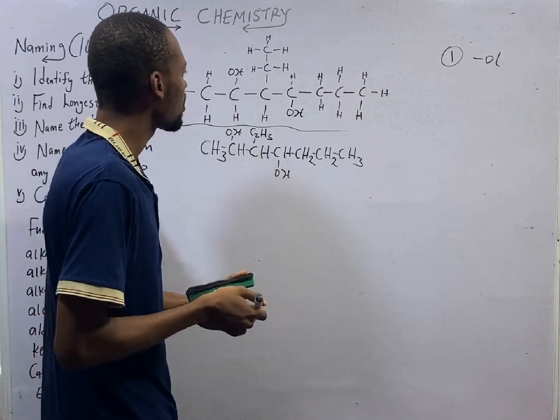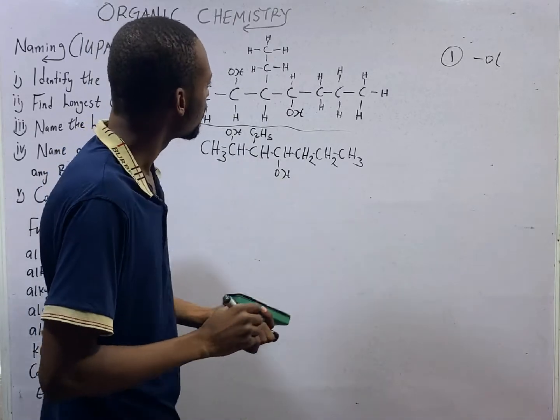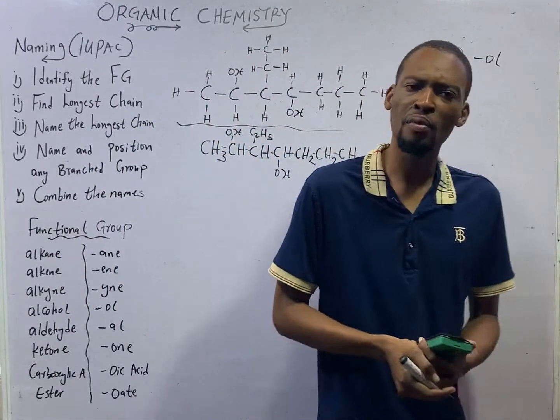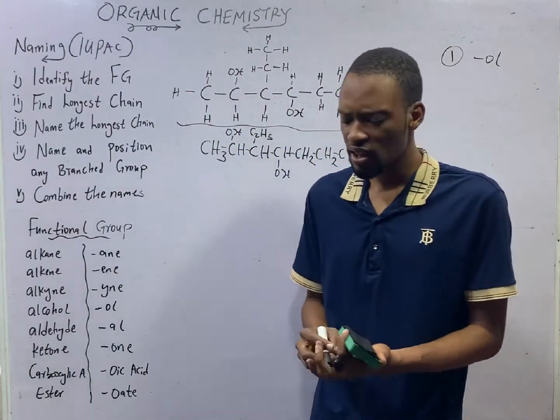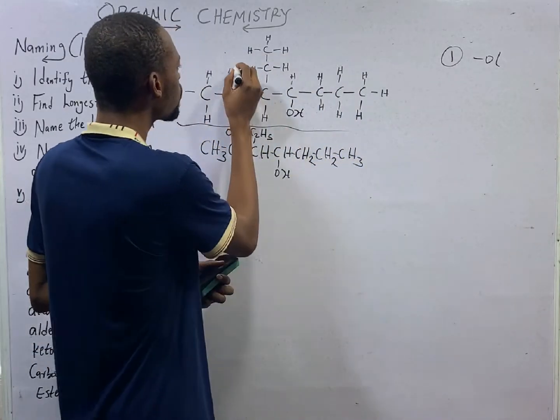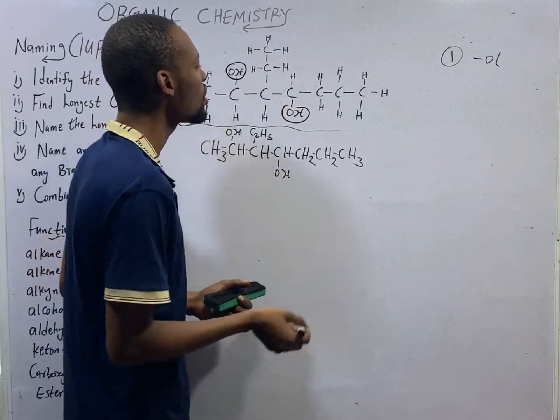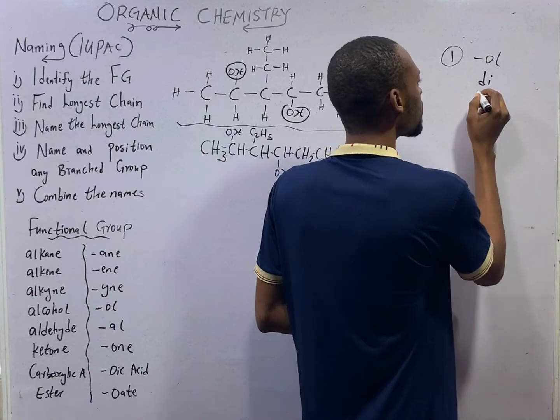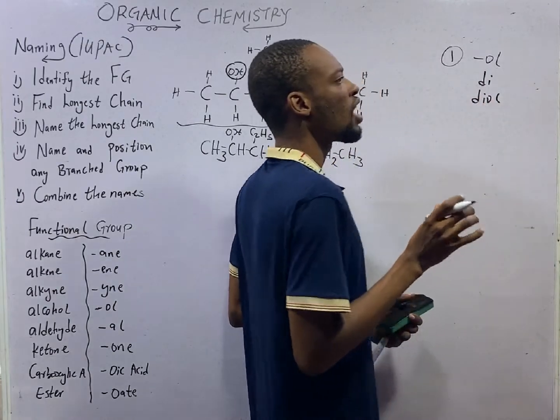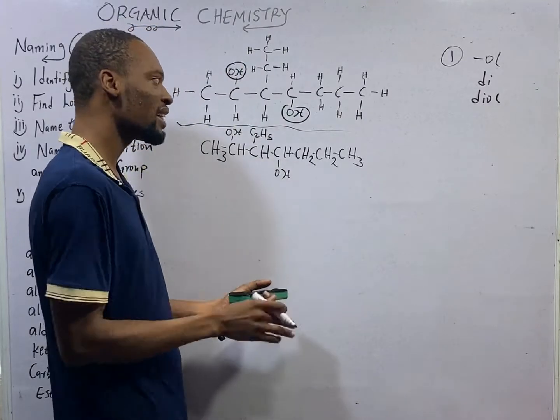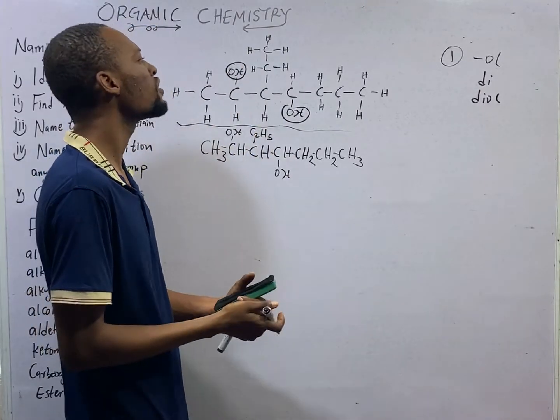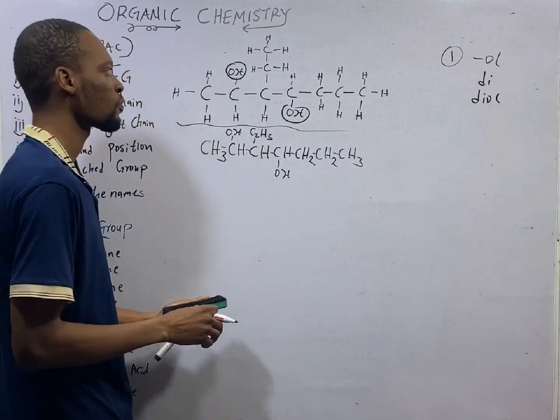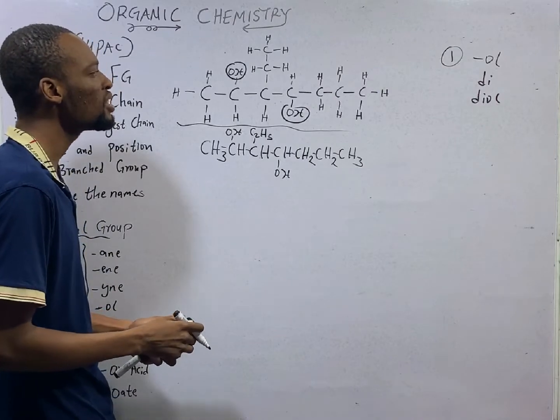Let's find the longest chain. In finding the longest chain for this compound, we have to be very, very careful. Why should we be very careful? We have two OH groups, which means there is presence of dye to give us diol. Our carbon naming must contain the two functional groups, even if it means it has to be shorter. It must contain the two, which means we have two naming options.